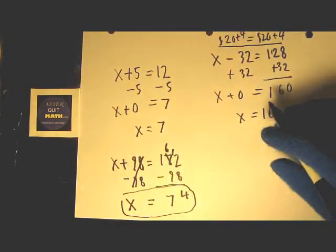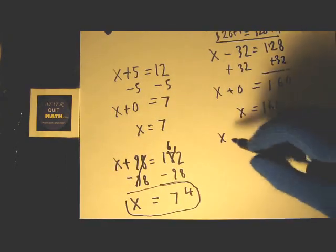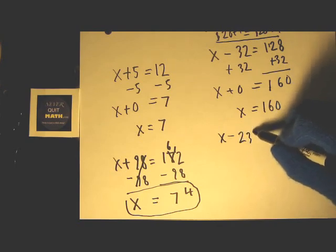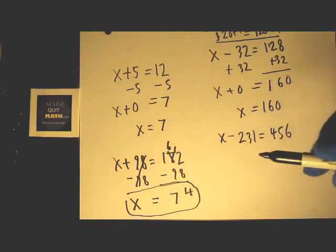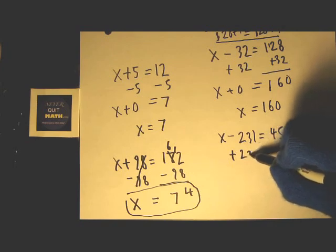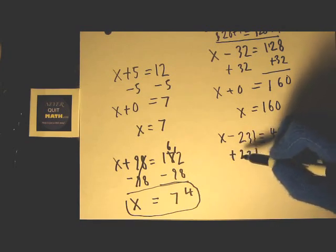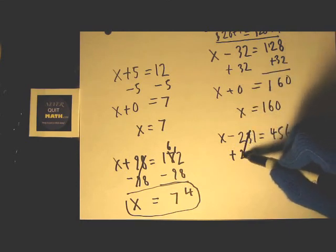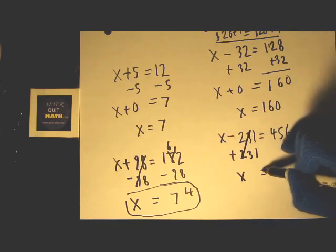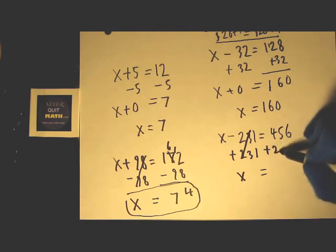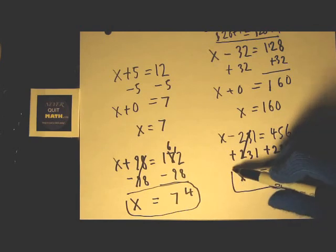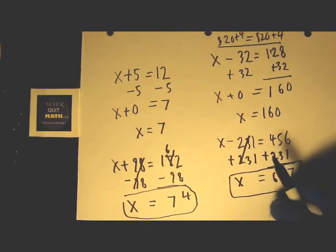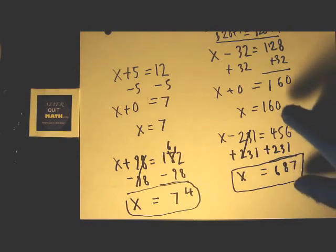Let's do one more. x minus 231 is equal to 456. So this is subtracted from x, we've got to do the opposite operation, so you add 231 here. And you know when they add together they come out equal to zero, just like the previous problem, so we can just cross out and bring down our x. Then what you do on one side you have to do on the other to keep them equal, so then now we add it. 6 plus 1 is 7, 5 plus 3 is 8, 4 plus 2 is 6. x is equal to 687.